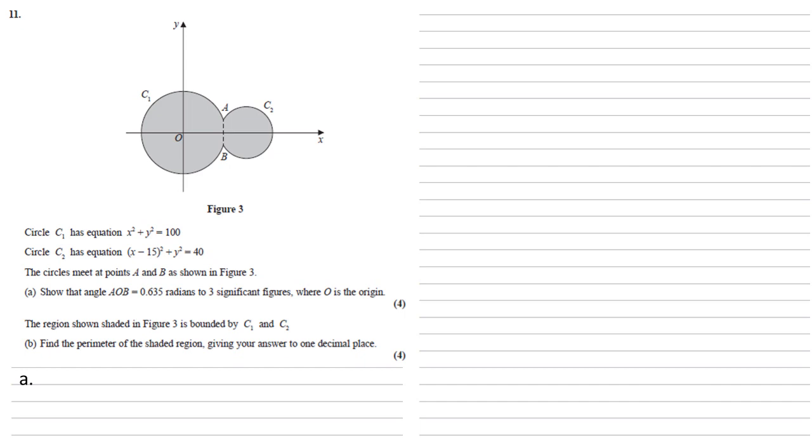We've got our equations x squared plus y squared equals 100 and x minus 15 all squared plus y squared equals 40. If we put these together, solve as simultaneous equations, we can find the x coordinates of A and B. Using our equation for circle one, if x squared plus y squared equals 100, y squared must equal 100 minus x squared.